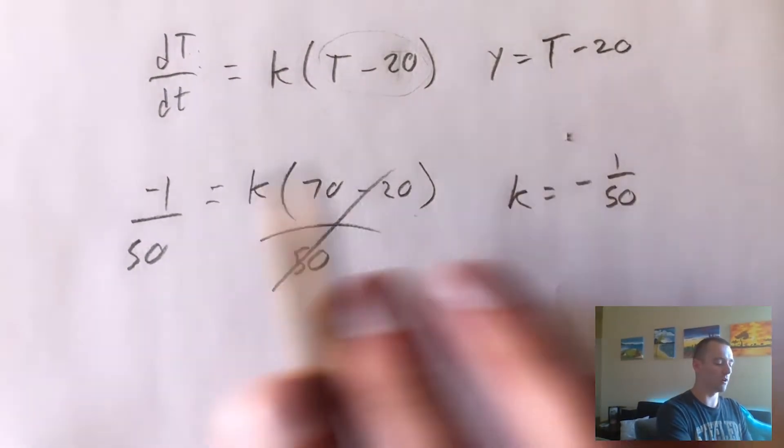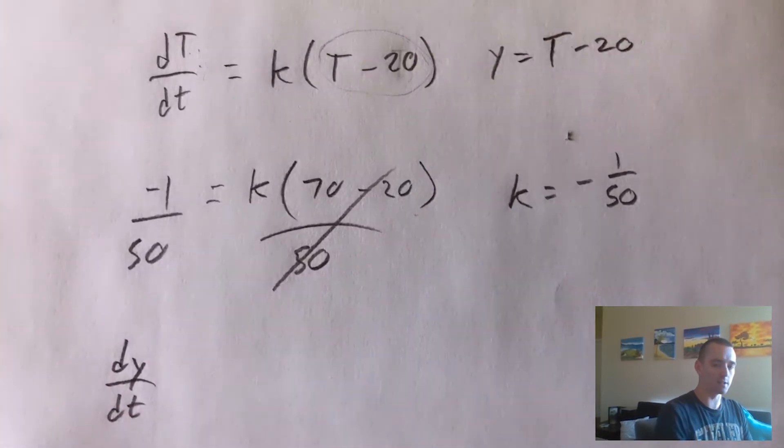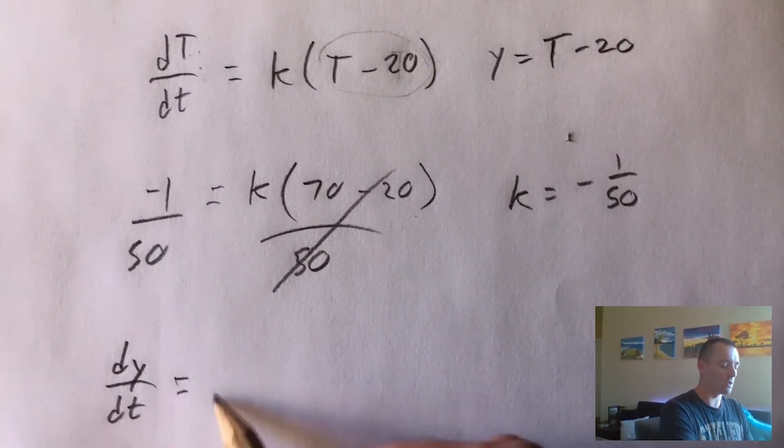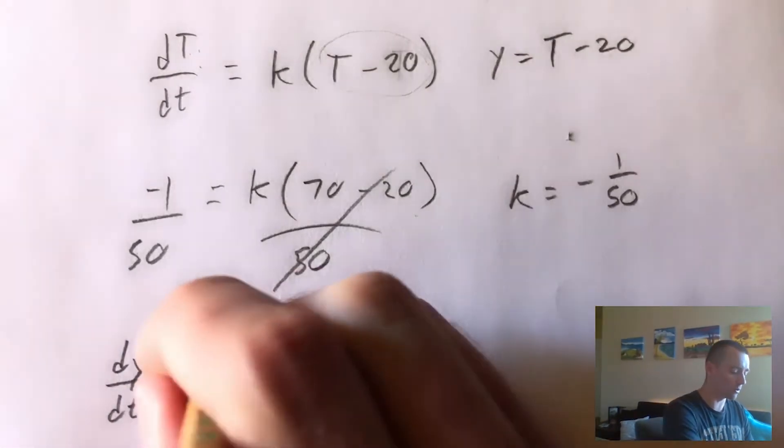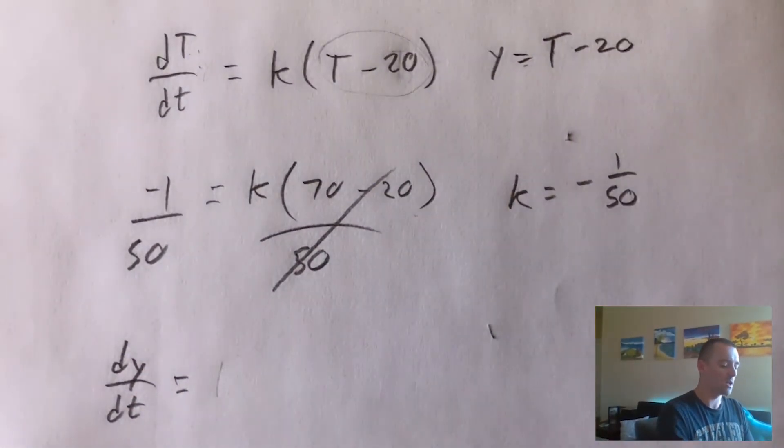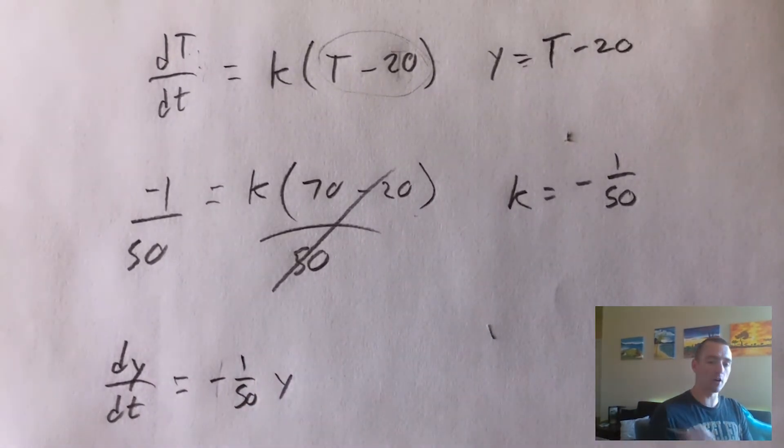Which has a pretty straightforward solution. Because making this change of variable allows us to say instead of dT/dt, we'll have dy/dt. And we know that's going to be equal to this constant K, which we've already solved for. We already know K is negative one over 50 times our new variable Y.